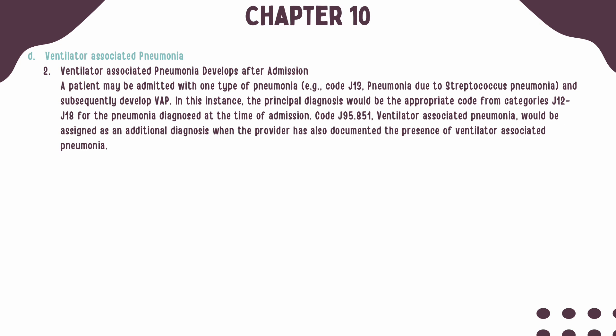If a patient is admitted with one type of pneumonia and subsequently develops ventilator-associated pneumonia, the principal diagnosis would represent the type of pneumonia diagnosed at the time of admission, followed by code J95.851 for ventilator-associated pneumonia as an additional diagnosis.